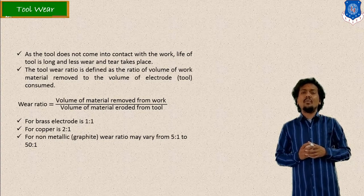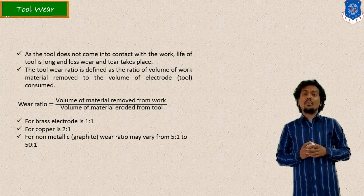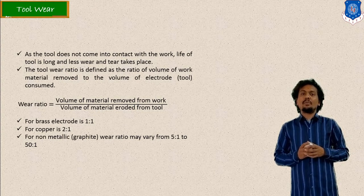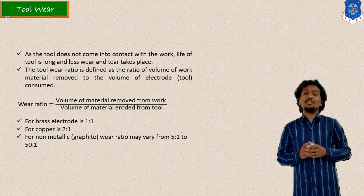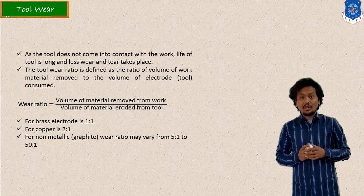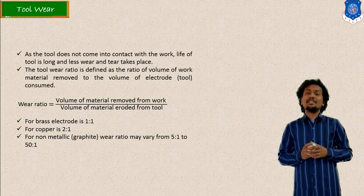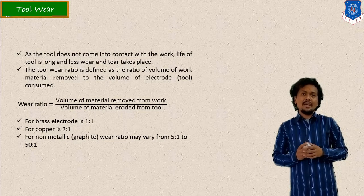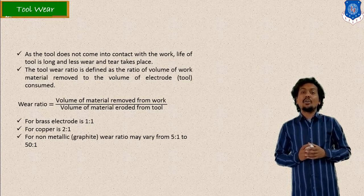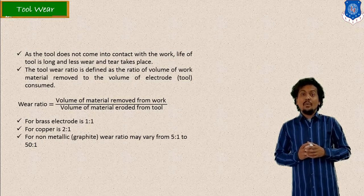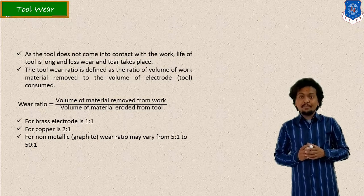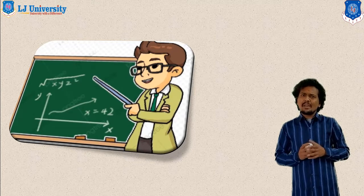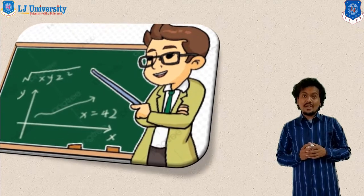For a brass electrode, the ratio is generally 1 to 1, meaning the material removed from the tool is higher, which is less desirable. For a copper electrode, the wear ratio is 2 to 1, meaning the volume removed from the workpiece is higher, which is desirable. This ratio — the wear ratio — indicates how much material will wear off from the tool. These are the basic things you should consider in electro-discharge machining.